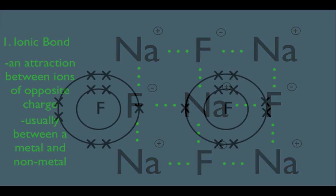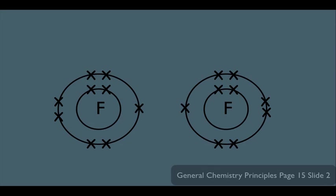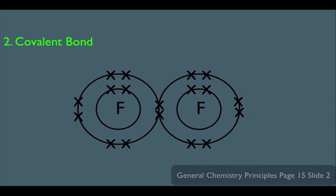Now let's talk about another type of bond. These are the electronic configurations of fluorine. We saw that if fluorine gains an electron it'll have an octet, but that's not the only way fluorine can gain an octet. If you take two fluorine atoms and combine them together in a certain bond, this would be called a covalent bond. What we're seeing here is that the fluorines are sharing those electrons in the center.